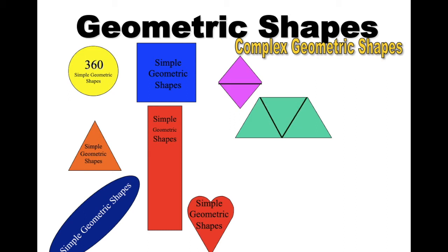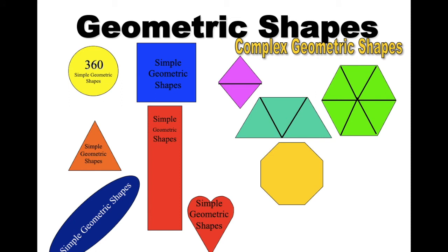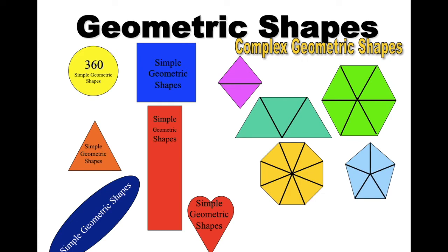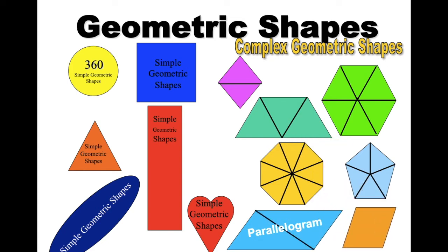A trapezoid has three triangles hiding inside. A six-sided shape is called a hexagon. A hexagon has two trapezoids hiding inside — or six triangles. An eight-sided shape is an octagon, which has eight triangles. A five-sided shape is a pentagon, and it's going to have five triangles. The last two are the really tricky ones. A rectangle that looks like it's leaning is called a parallelogram. And a square that looks like it's leaning is called a rhombus.